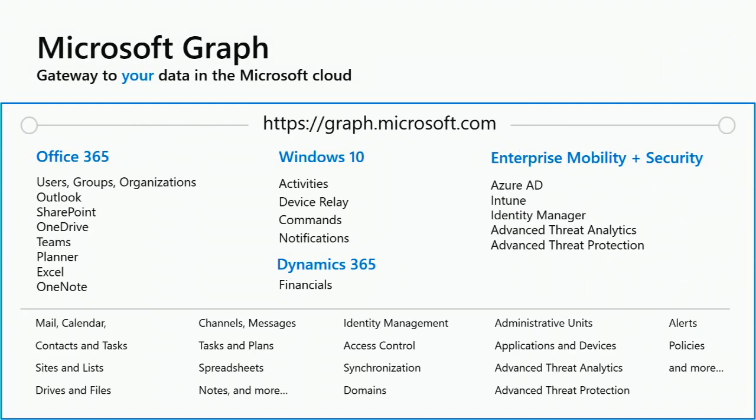What is in the Graph? Across the different workloads within Office 365, you have users, groups, organization, Outlook, SharePoint, OneDrive, Teams, Planner, etc. Within Windows 10, aside from security, you have activities, commands, and notifications. We've just added Dynamics 365 into our public preview or beta branch. Enterprise Mobility and Security gives you access into identity across Azure AD, device management in Intune, advanced threat analytics, and advanced threat protection across multiple workloads.